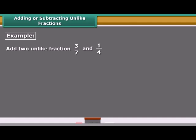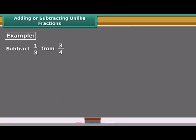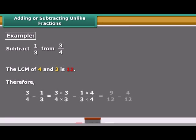For example, 3 upon 7 and 1 upon 4 are two unlike fractions. In order to add them, we first find their equivalent fractions with the same denominator. These are 12 upon 28 and 7 upon 28. Note that 28 is the least common multiple, LCM, of 7 and 4. In another example, to find the subtraction of unlike fractions, we find equivalent fractions of 3 upon 4 and 1 upon 3 with the same denominator given by the LCM of 4 and 3. The required LCM is 12. Therefore, the subtraction of 3 upon 4 and 1 upon 3 is 5 upon 12.